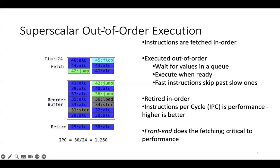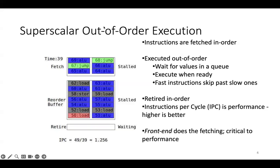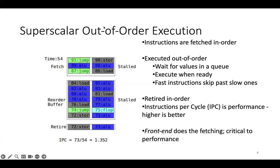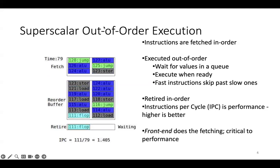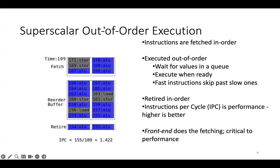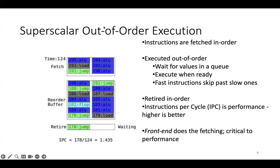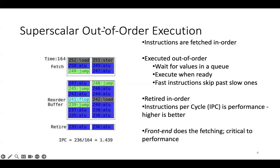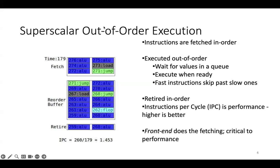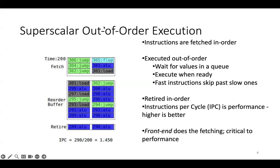A standard model of out-of-order execution: instructions are fetched in order, executed out of order using something like Tomasulo's algorithm, and retired in order. Instructions per cycle (IPC) is the metric — higher is better. Recent research has tended to focus on the front end that fetches instructions. It is critical to performance — we have to get the right instructions into the processor so that they can be worked on with the vast execution resources available, but this front end is kind of a bottleneck.